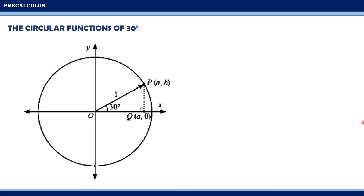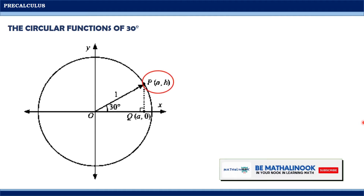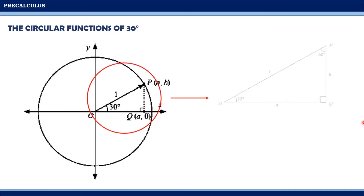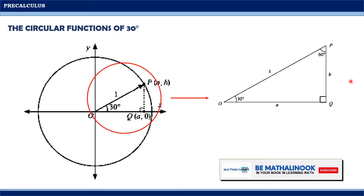Let us consider an angle of 30 degrees on the unit circle. If we want to determine the coordinates of the 30-degree angle, we can use the concept of special right triangles. Let P with coordinates (A, B) be the point where the terminal side of 30 degrees intersects the unit circle. From P, draw an auxiliary line perpendicular to the x-axis, labeling this point as Q with coordinates (A, 0). We now have a right triangle POQ with a right angle at Q.